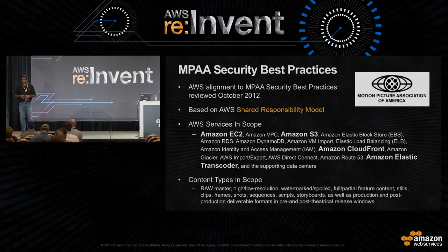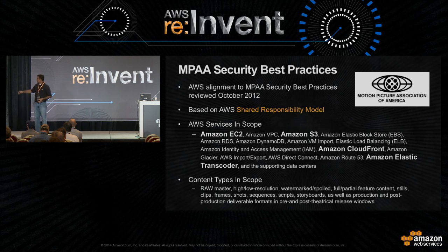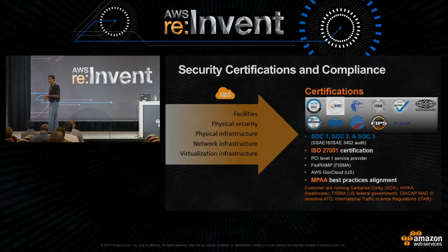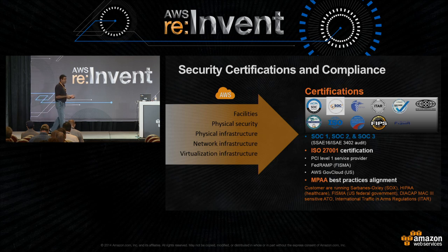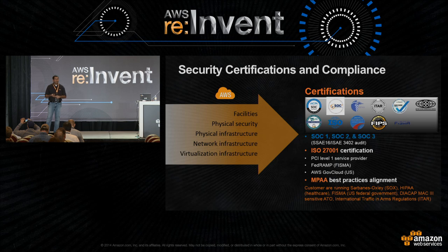AWS has alignment with the MPAA security best practices for media delivery, covering multiple services and content types. Beyond MPAA alignment, AWS services also have numerous security certifications and compliance requirements including SOC 1, SOC 2, SOC 3, ISO 27001, PCI compliance, and FedRAMP in the federal space. More details are available on the AWS security center.